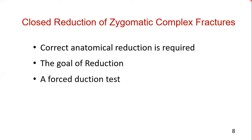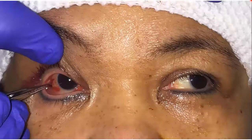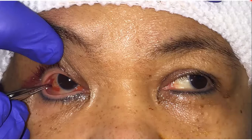It is possible that the periorbital contents may have been affected by the reduction of the zygomatic complex fracture. Therefore, a forced duction test should be performed following the reduction of the zygoma to make sure that the patient does not have entrapment of soft tissues. Pre- and post-operative eye examination should be considered in all patients who have sustained periorbital trauma. This forced duction test is performed to determine the absence of movement restriction of the eye.